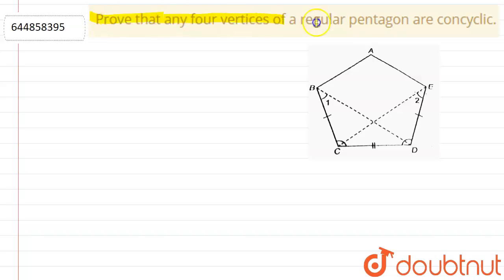Prove that any four vertices of a regular pentagon are concyclic. So now here we have to prove that any four vertices of a pentagon are concyclic. We see that in triangle BCD and in triangle ADC,